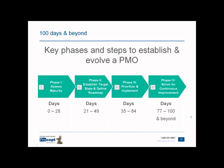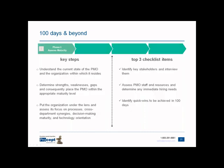Now I want to take a deeper look into each phase. For each phase, I'll cover the key steps and the top three checklist items. Phase one is assessing maturity — determining the current state of the PMO or the organization in which it resides. If you have project managers happening within the organization, accidental project managers leading projects, or non-PMs leading projects, taking stock of the situation is the first step: understanding what's working well, what's not working well, why it's not working, and what has been tried to improve it.